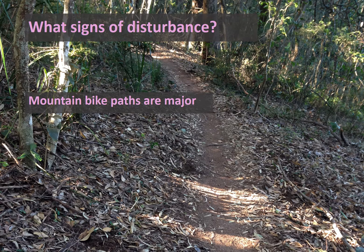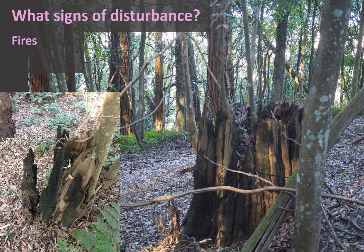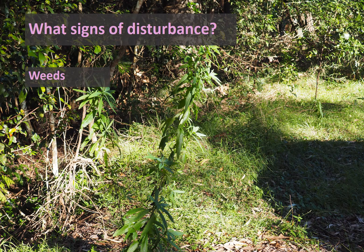How about signs of disturbance? Mount Kira is very popular with mountain bike riders, so there are quite major paths running through all these areas, and that will obviously affect the growth of seedlings. You might also notice here some burnt logs and trunks, which are signs of fire passing through at some point, and perhaps also logging. And finally, up on the side of the road, there are quite a few weeds.